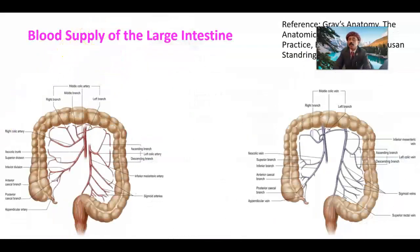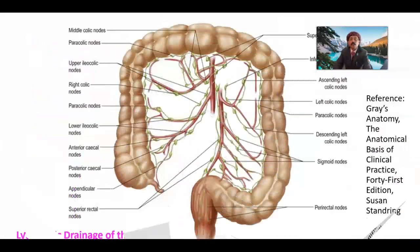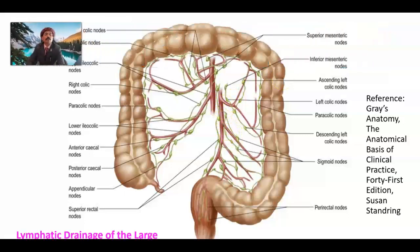In summary, blood supply comes from the sigmoid arteries, branches of the inferior mesenteric artery. Sigmoid veins are tributaries of the inferior mesenteric vein. Lymphatic drainage goes through the sigmoid lymph nodes, which open into the inferior mesenteric lymph nodes. This is clinically important because cancer spread from the colon — especially from the sigmoid colon — travels through the sigmoid lymph nodes, ultimately reaching the inferior mesenteric node.